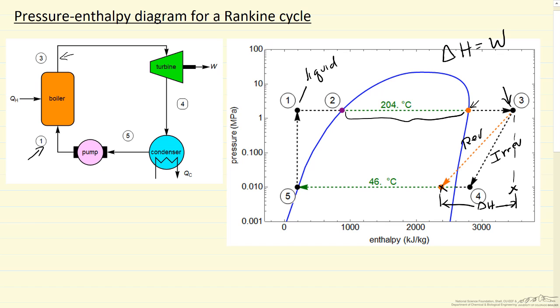A bigger drop, we get more work out of the turbine, and the work is negative if we're taking energy out of the system. The irreversible, we get less work out. It's less efficient, we end up at a higher temperature in this case for the irreversible turbine.